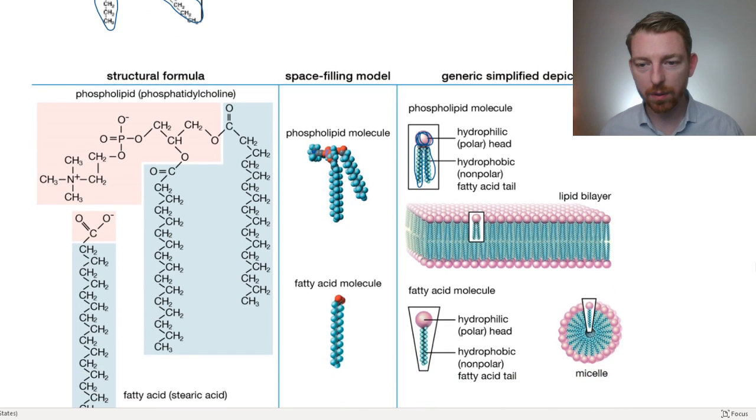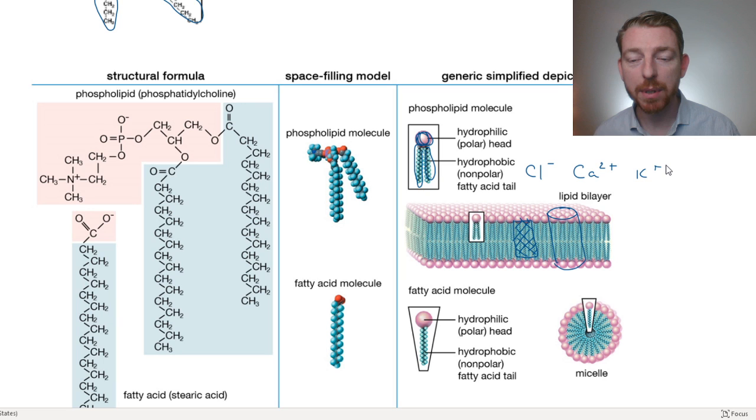You can also use this non-polar section to embed some other types of molecules, so we'll look at that when it comes to proteins. Because we're going to want some way of transporting different molecules through this barrier, because anything that's water soluble, so whether it's chlorine ion, calcium, potassium ions, these aren't going to be able to travel through this barrier without something that's going to provide a portal for it.